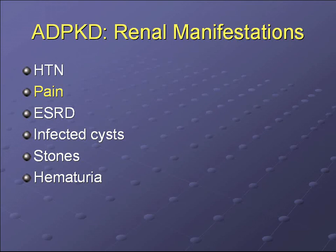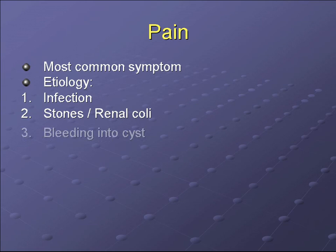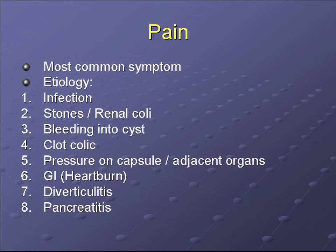Of most significance for a urologist is pain, which is probably the most common symptom. Pain can be attributed to infection of cysts, stones causing renal colic, hemorrhage into a cyst, clot colic, pressure on the renal capsule or adjacent organs. When someone presents with pain, GI causes such as heartburn, diverticulitis — more common in these patients — and pancreatitis should also be considered, as some cases have been missed by attributing symptoms to capsular pressure.